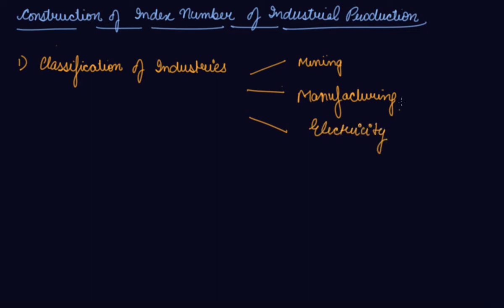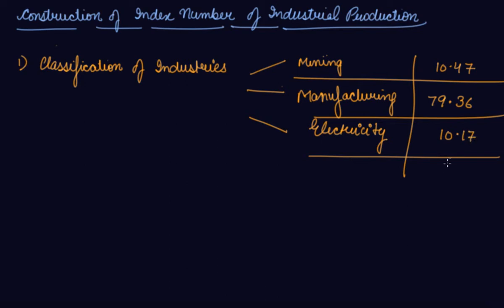In India, weights are given according to these three major industries. 10.47 weightage is given to mining, manufacturing is given 79.36 weightage, and electricity is given 10.17 weightage. So totally it comes out to be 100 as your weights.